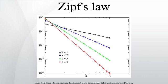The third most common frequency will occur 1/3 as often as the first. The nth most common frequency will occur 1/n as often as the first.